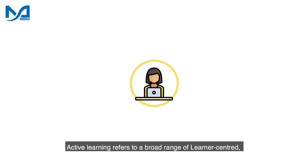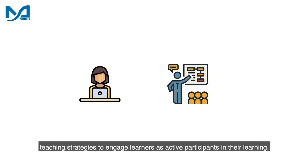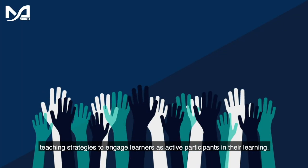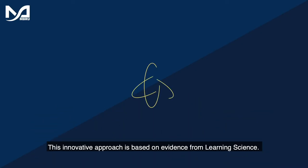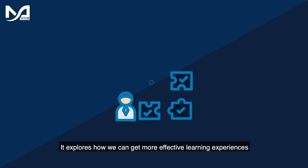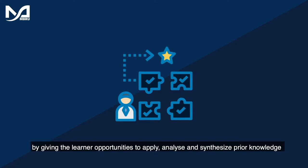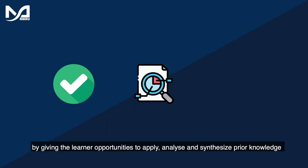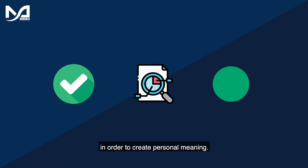Active learning refers to a broad range of learner-centered teaching strategies to engage learners as active participants in their learning. This innovative approach is based on evidence from learning science. It explores how we can get more effective learning experiences by giving the learner opportunities to apply, analyze, and synthesize prior knowledge in order to create personal meaning.